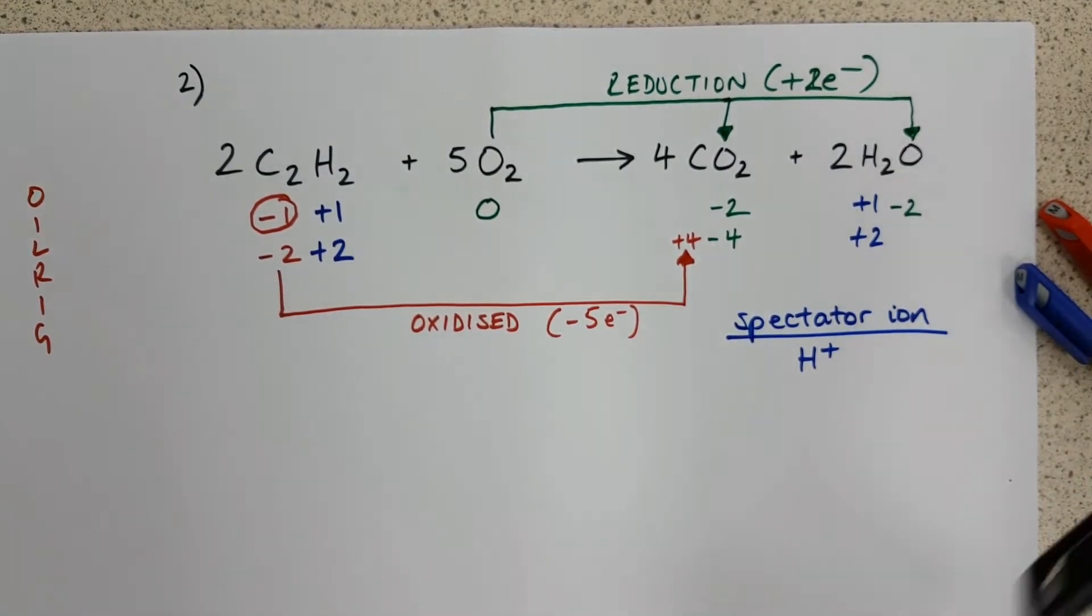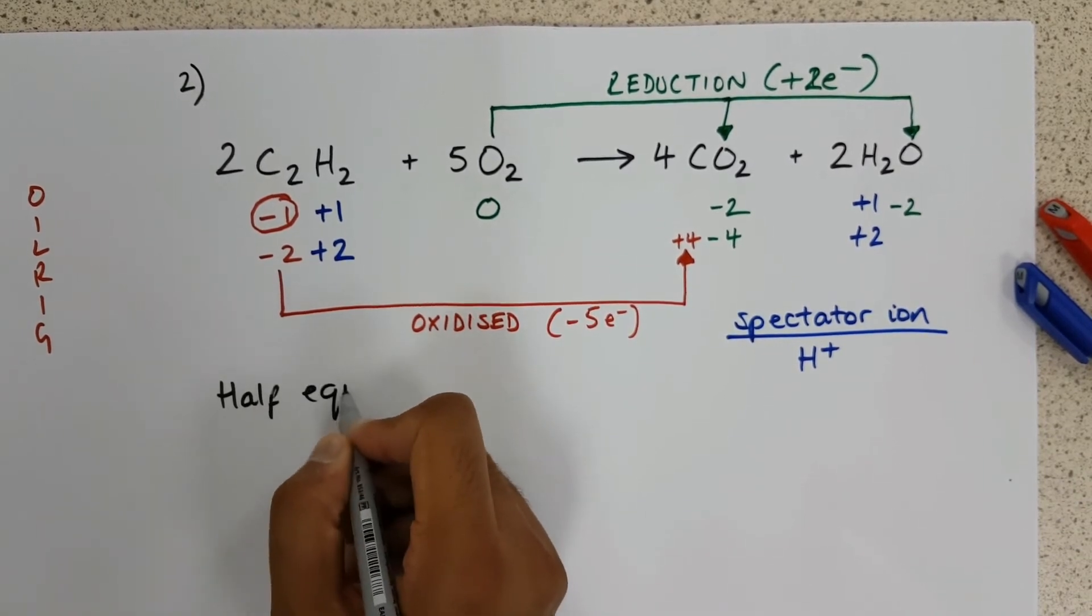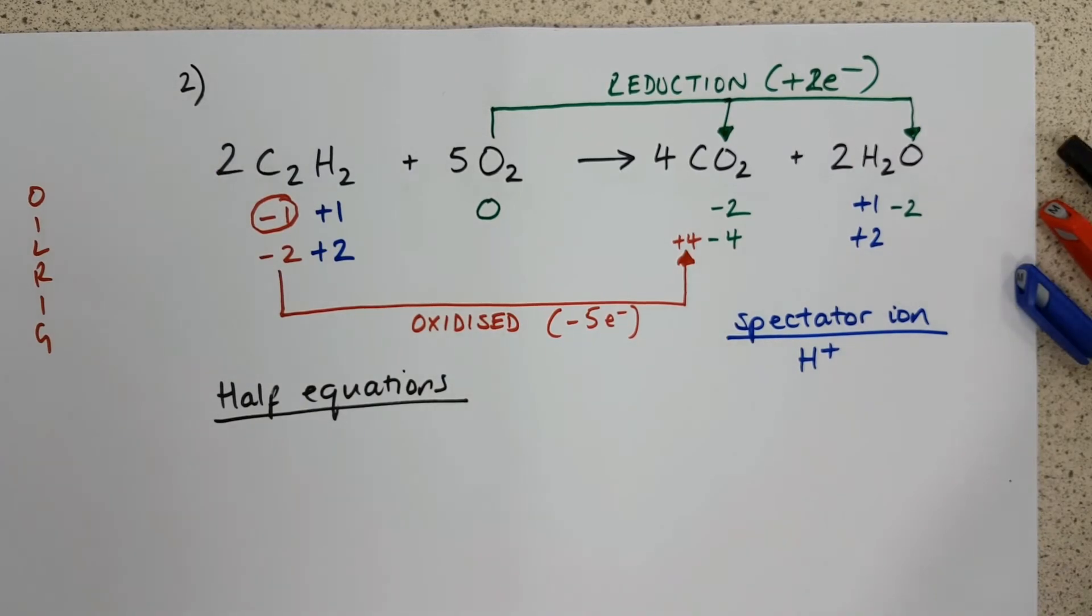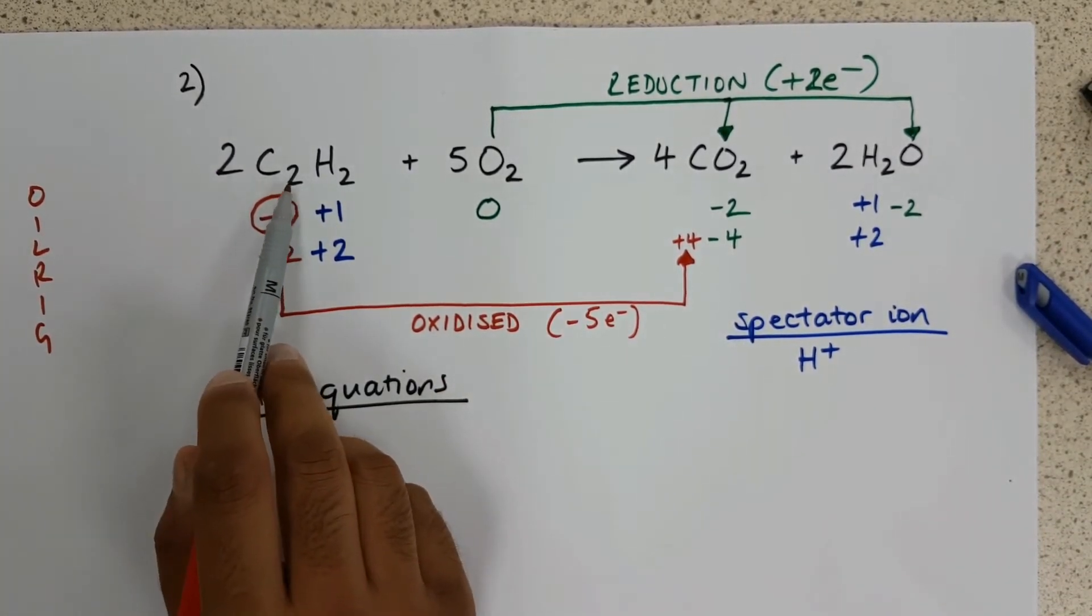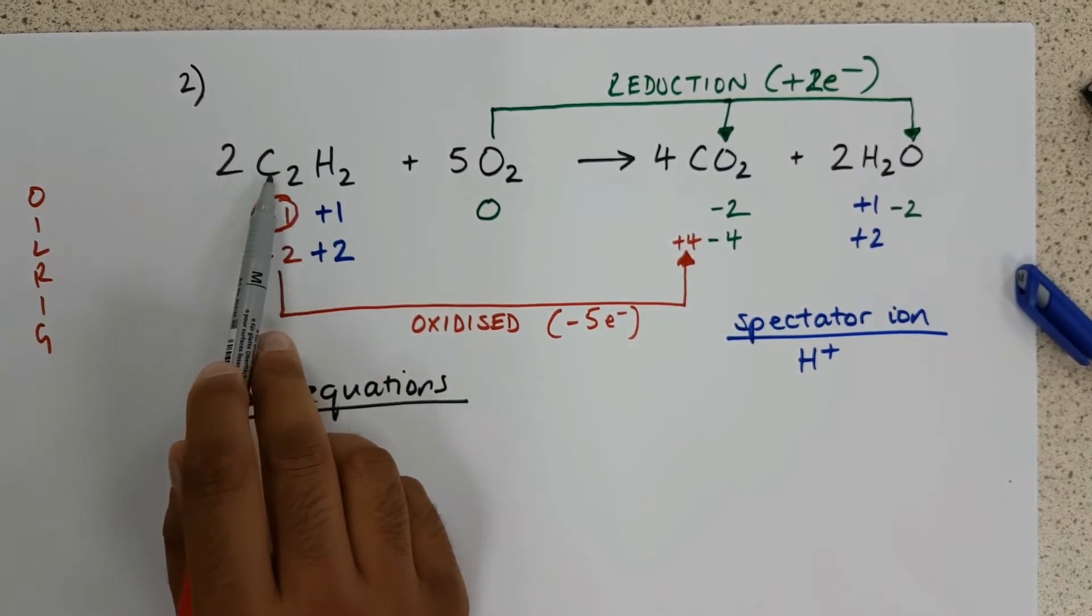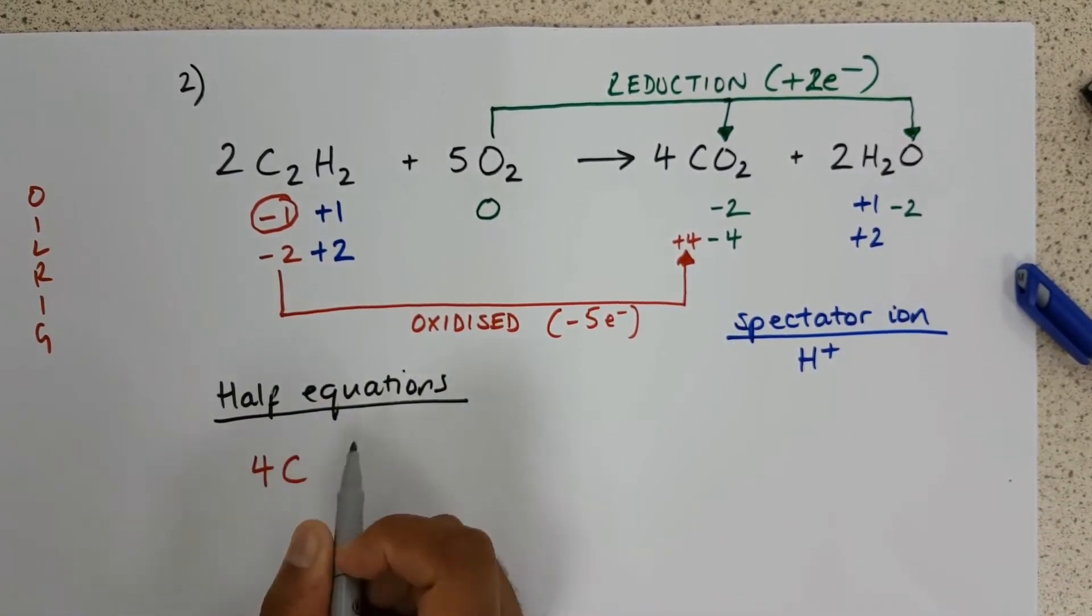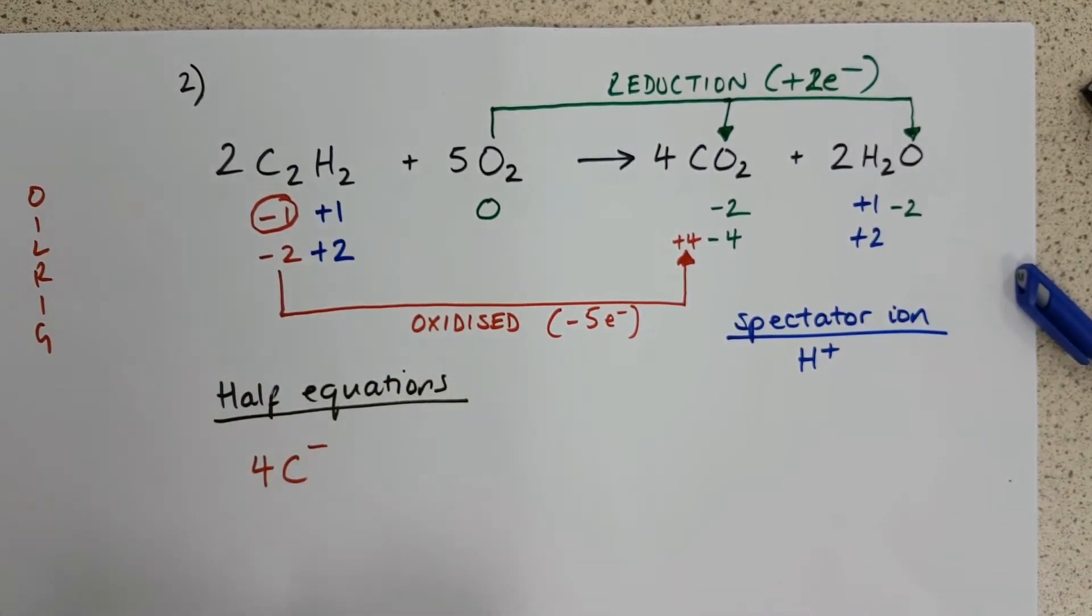Next step, our half equations. We need to rewrite each equation. So the first one we'll look at is carbon. Altogether, we have, on this side of the equation, two carbons times by two. That gives us four carbons. And notice they have a charge of minus one.